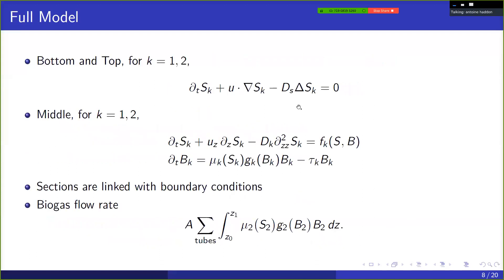So here's the full model, advection diffusion in the bottom and top section in three dimensions, and then a single dimension equations for the substrate, advection, diffusion, reaction, and then for the biomass, again, only reaction and the death rate. And so the link in between the different sections is done with boundary conditions.